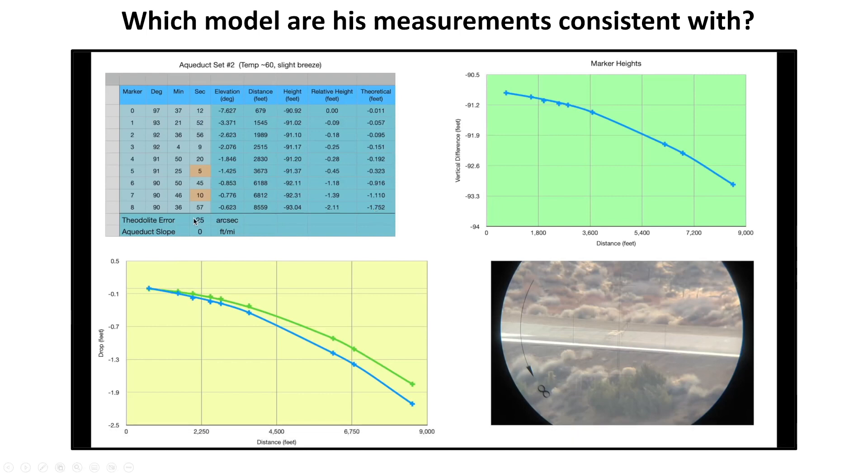All right. What you can see is though, that even according to his own measurements, marker number eight is 2.11 feet below the marker number zero. But is that due to earth curve, due to the slope of the aqueduct or is it both? Well, we'll get the answer in a second, when he adds in that three inches per mile slope, in this aqueduct slope cell. And then you'll see that his measurements match up with the earth curve.